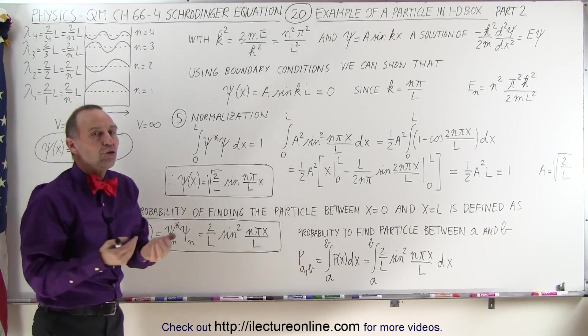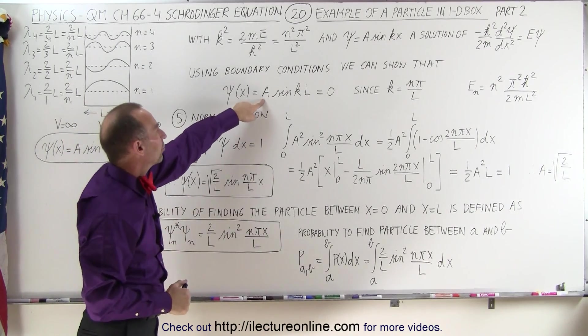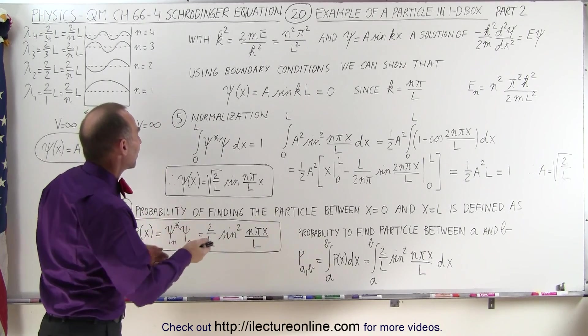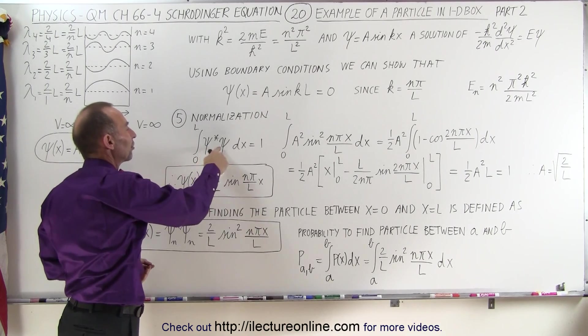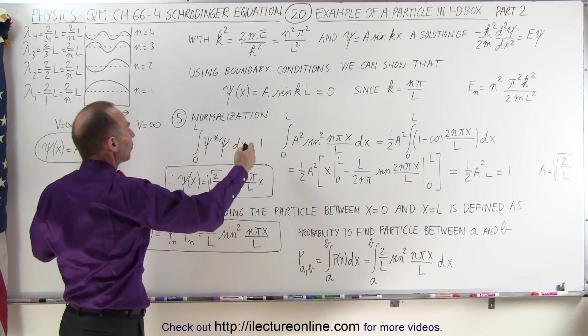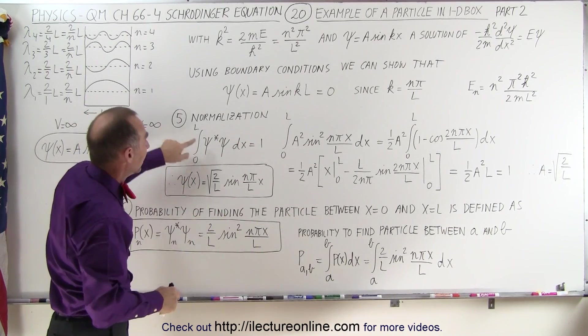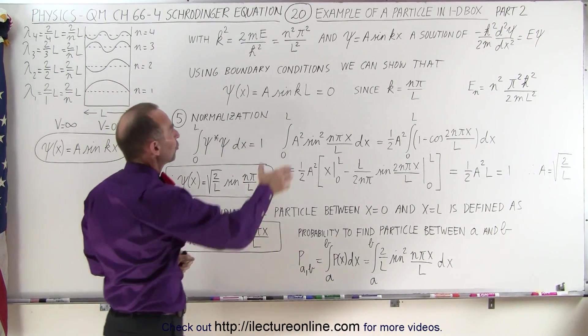Next, what we need to do was normalize the wave equation so that we can solve for the constant in front of the sine times kx. And so that means that we had to integrate over the product of the complex conjugate of the wave function times the wave function, and we knew that that integral over all the space where the particle can exist, in this case only between zero and l, we knew that integral had to equal one.